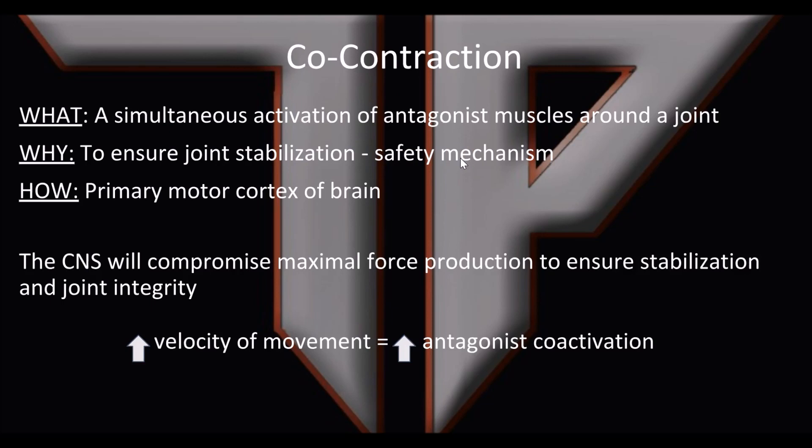Where does co-contraction happen? It originates in the primary motor cortex of the brain. Keep in mind that the CNS will compromise maximal force production in order to ensure stability of the joint and its integrity.